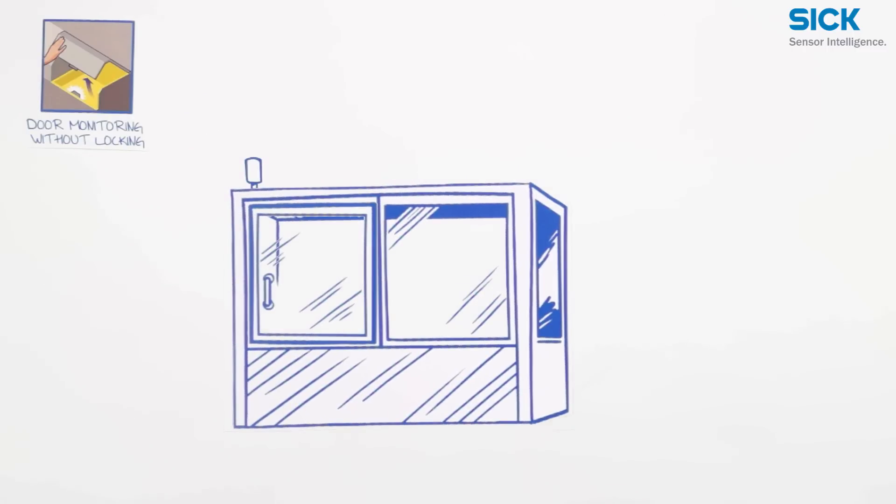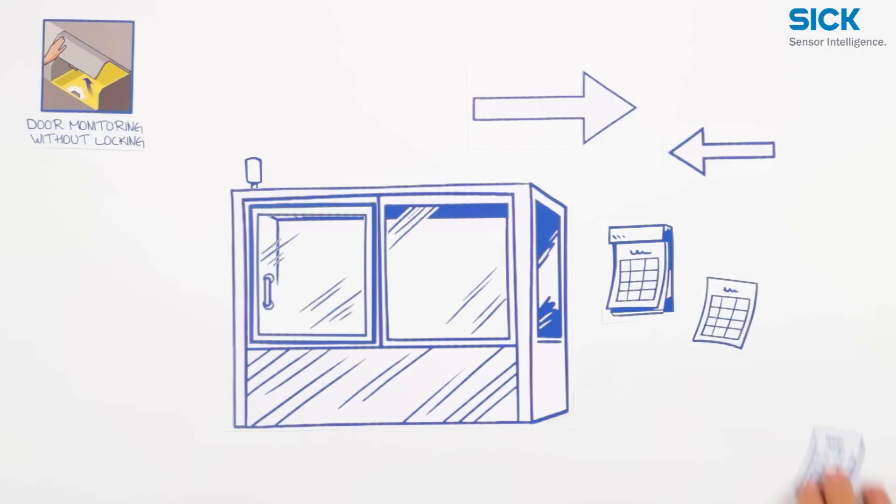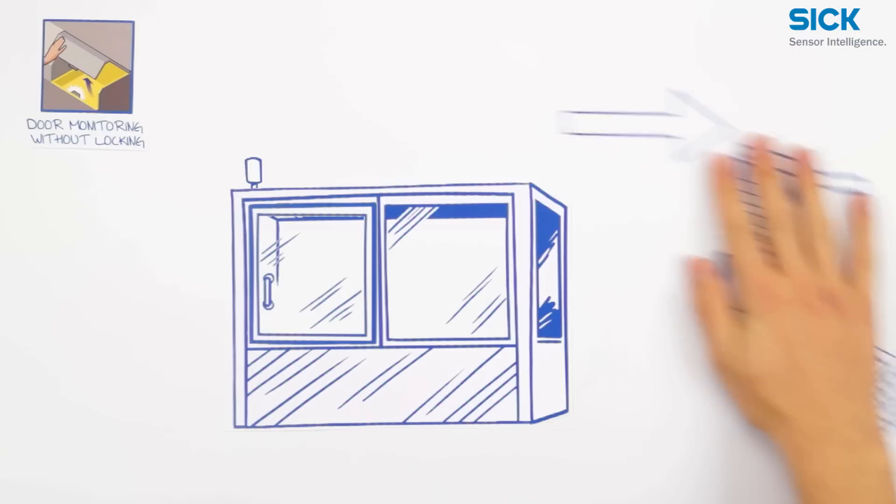But what if it is too difficult to ensure the precise guidance of an actuator? Or if the door gets misaligned as time passes? Or if you have an application with strict hygiene standards? In these cases, you should use non-contact safety switches, which are resistant to offset and contamination.